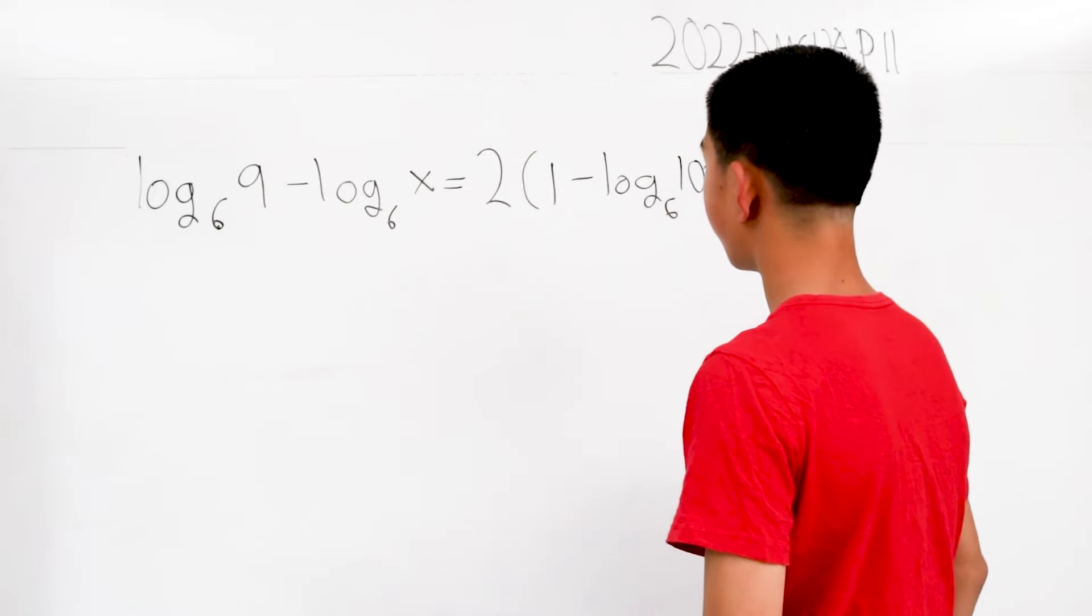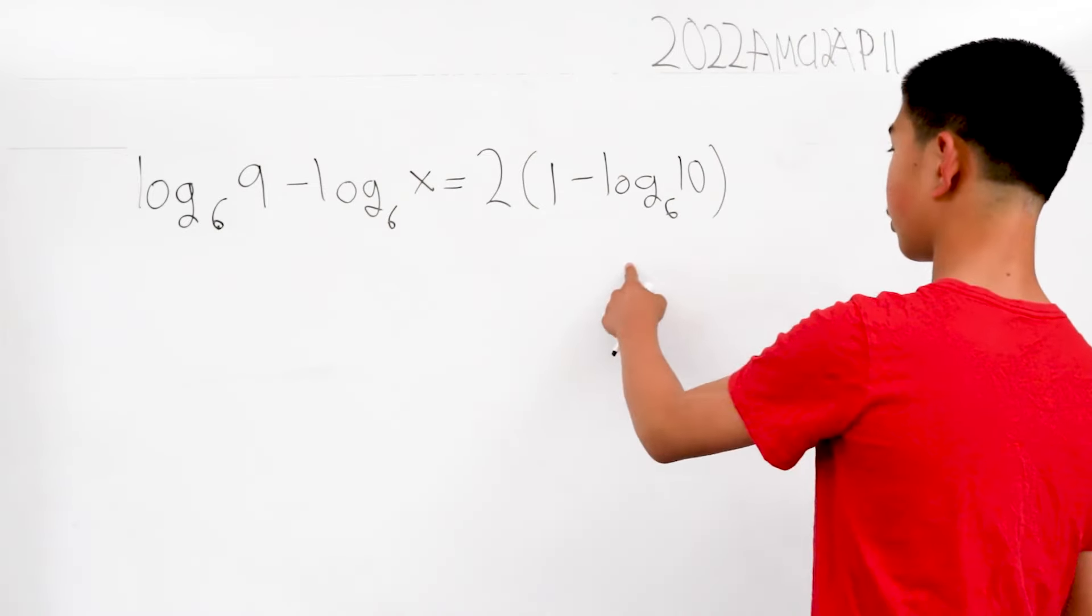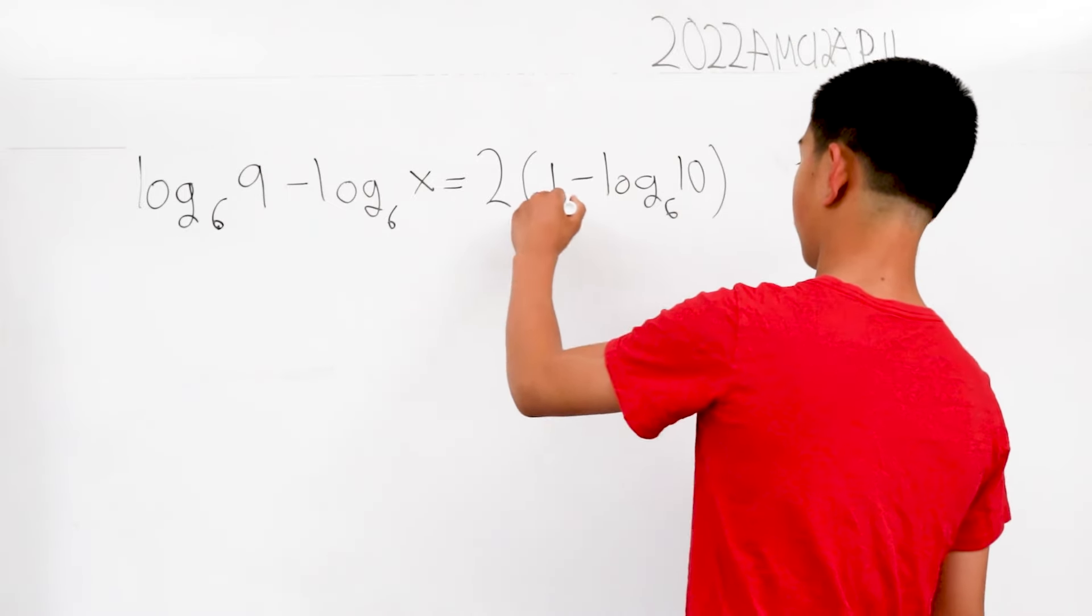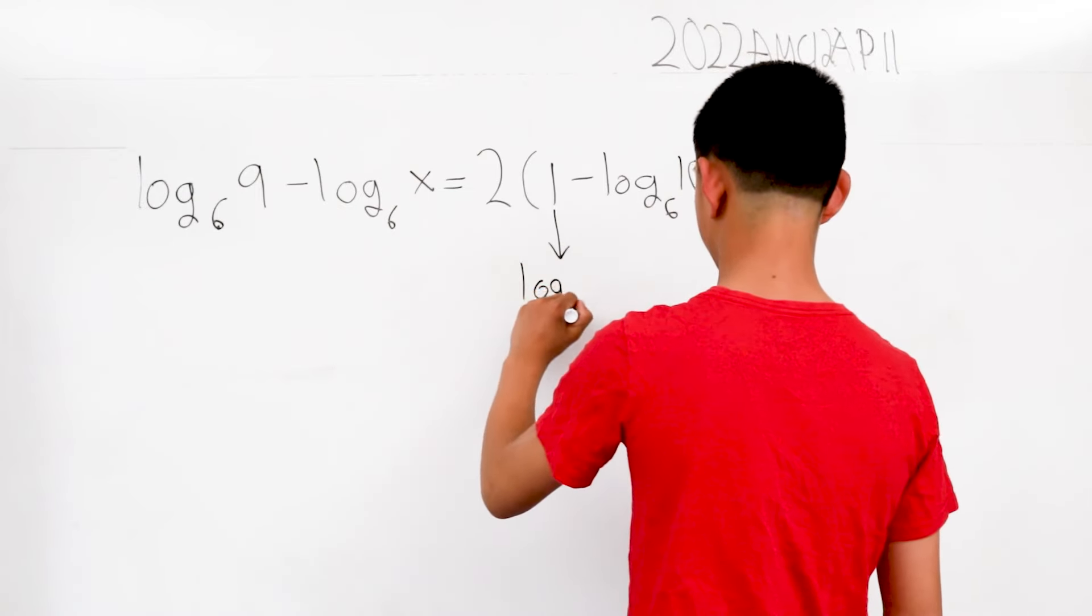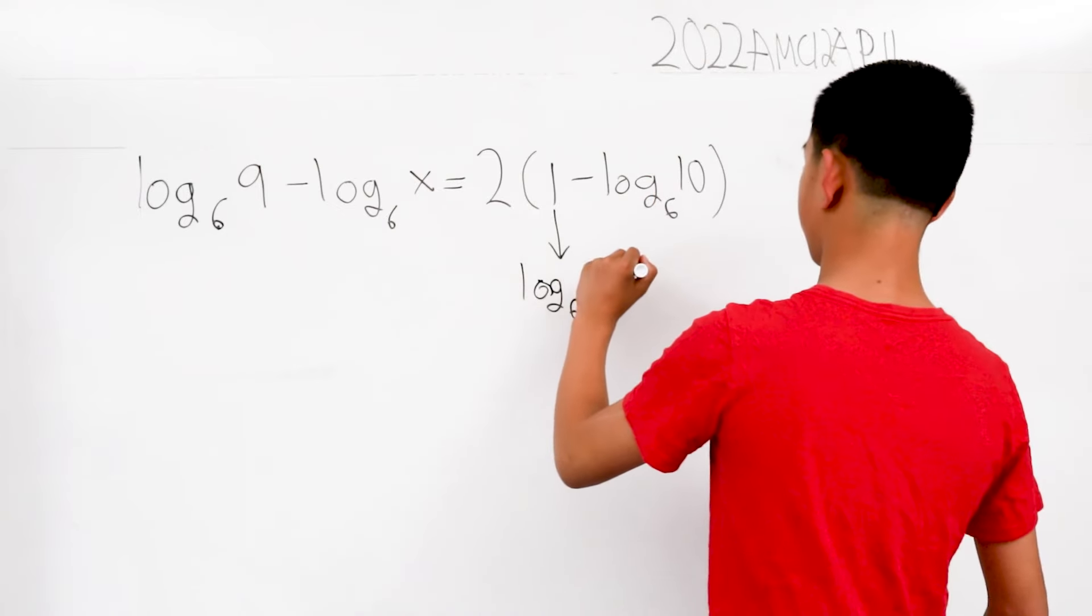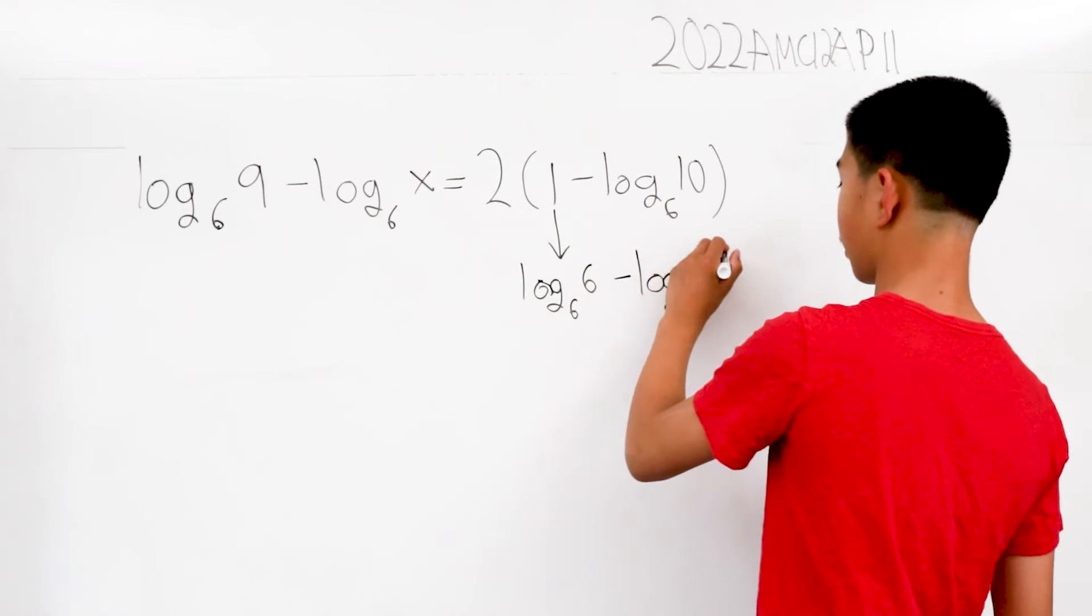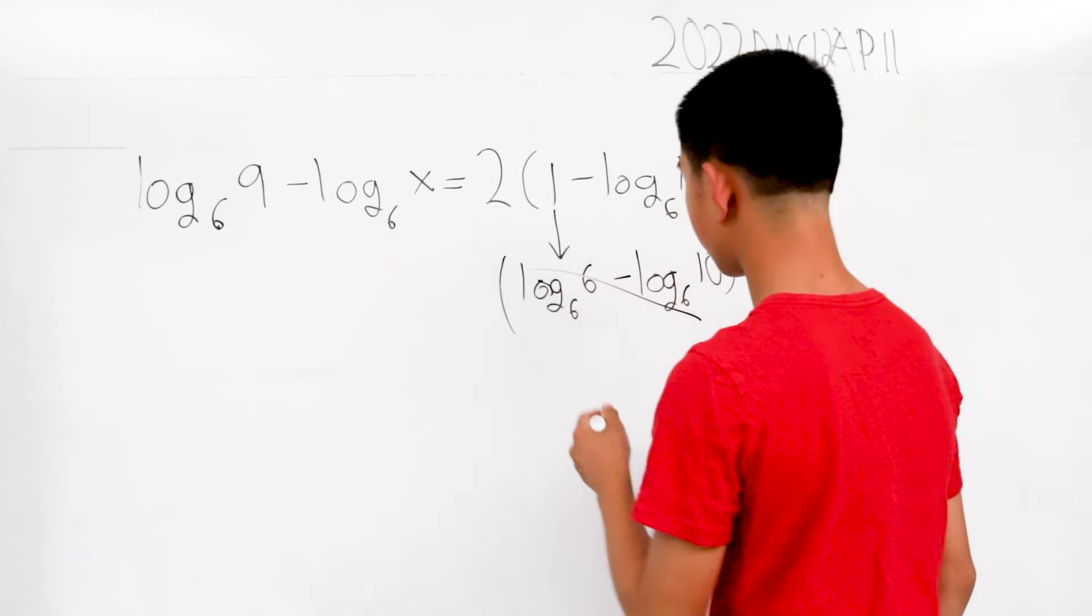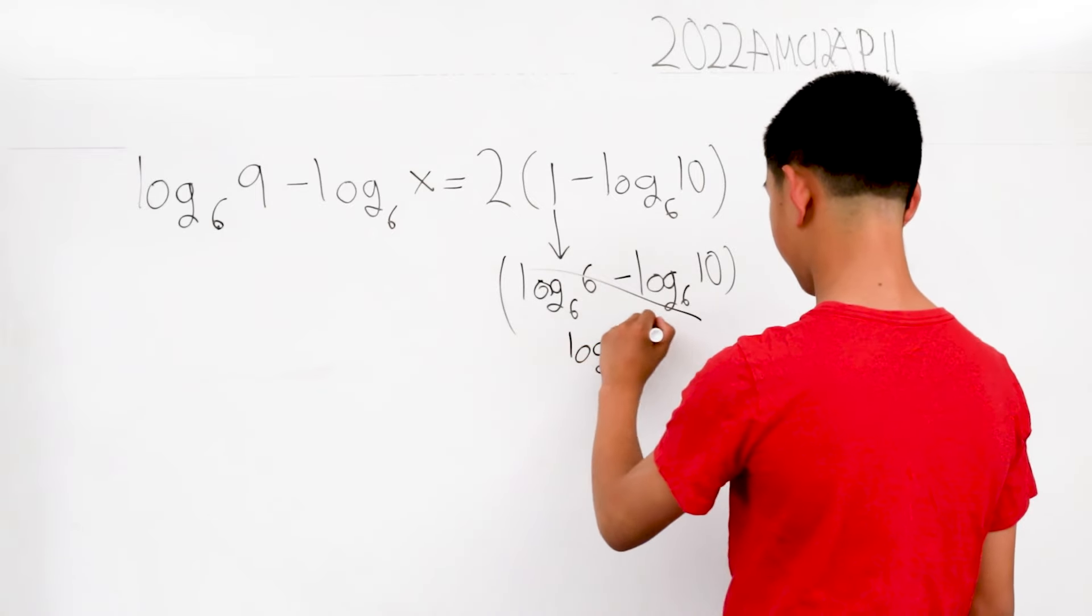We now have that equation. What we can do here is convert this 1 to log base 6 of 6. We can make that true, and then this is minus log base 6 of 10. When you do this, this all simplifies to log base 6 of 6 tenths.